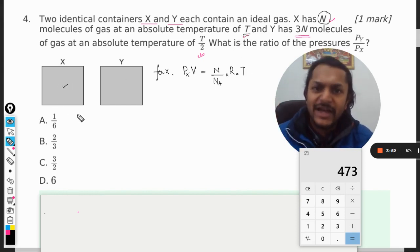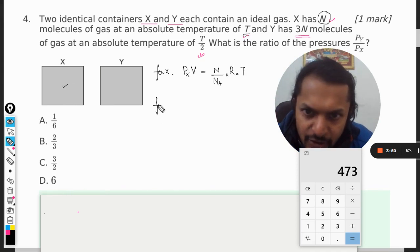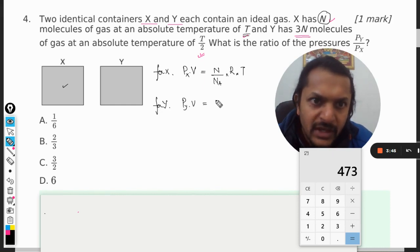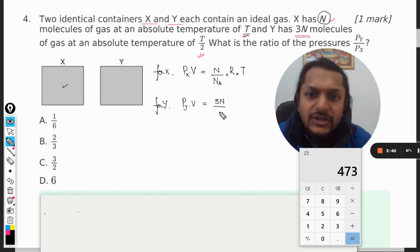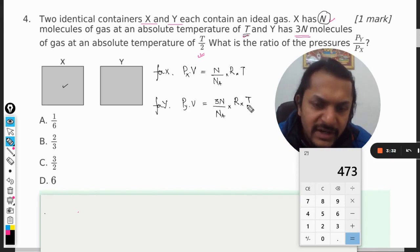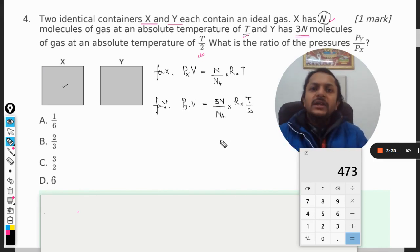Now similarly for Y, I will write it as Py V is equal to, now the number of molecules are three times, now it's 3N, so 3N divided by Avogadro's number, multiplied by R, universal gas constant, and the temperature that is maintained is T/2.